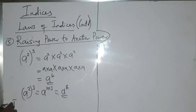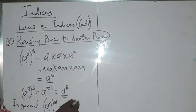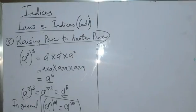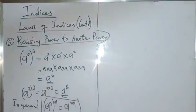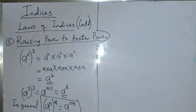In general, we can conclude that A raised to power n, then raised to power m, will give us A raised to power n×m. That is the rule — the fifth law of indices. So A^n raised to power m equals A^(nm). Now let's look at examples on this before moving to the next law.